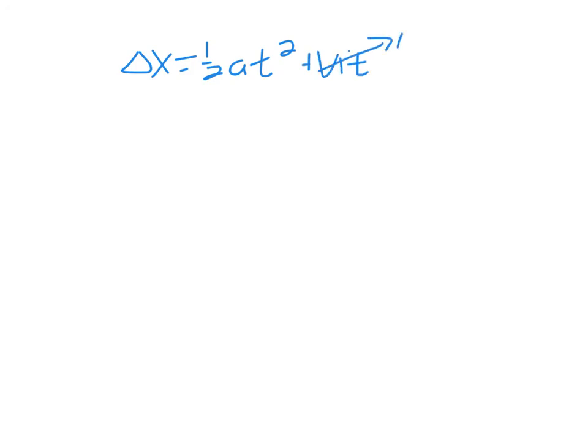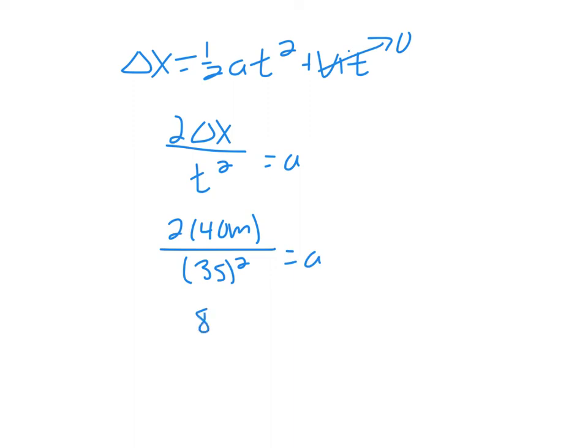Isolating for acceleration, we get 2 delta x over t squared equaling a. So 2 times 40 meters divided by 3 seconds squared equals acceleration. This gives us 8.8 repeating meters per second squared for a.